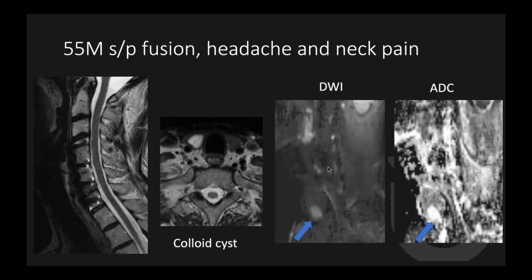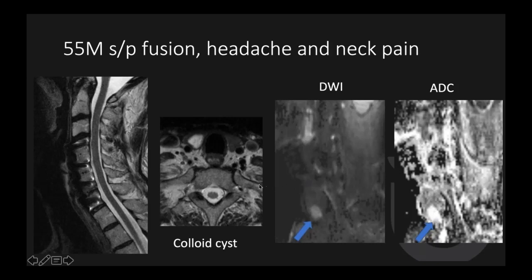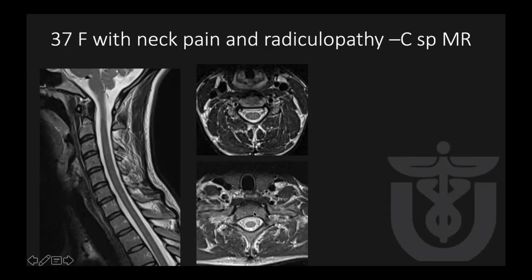This is a 55-year-old male status post cervical fusion. A thyroid nodule was found, but the good signs are: T2 bright signal, well circumscribed, no extrathyroidal extension, no lymph nodes. Diffusion was available and there is no restricted diffusion — if anything, facilitated diffusion. So these are benign lesions, likely colloid cysts.